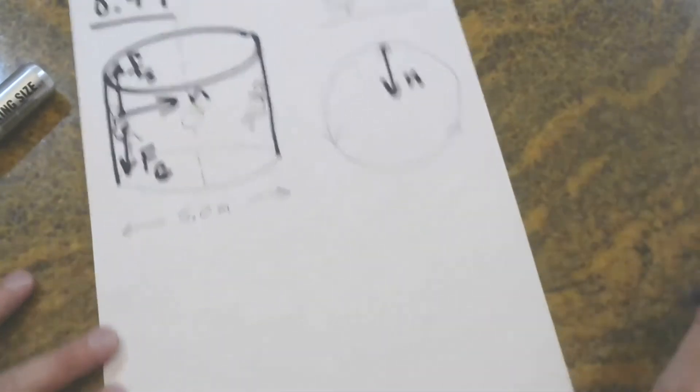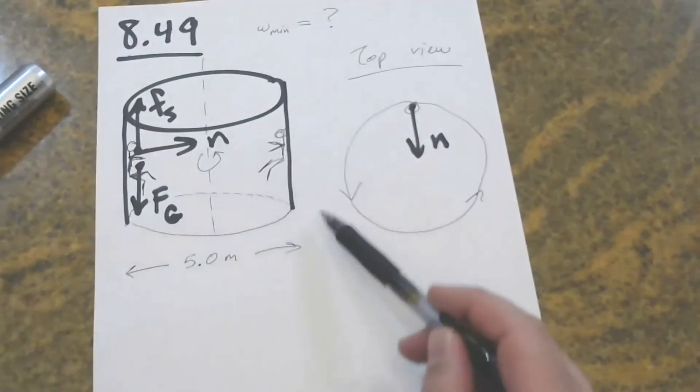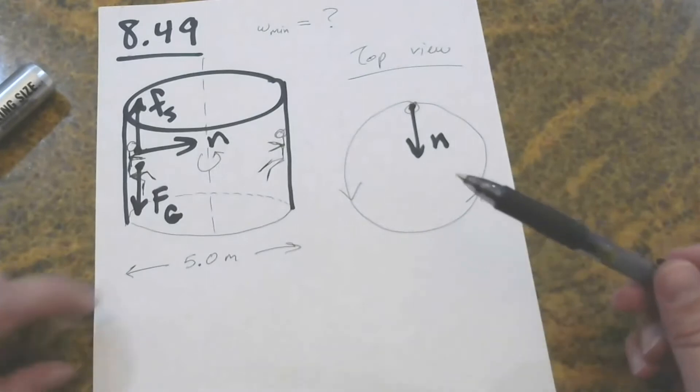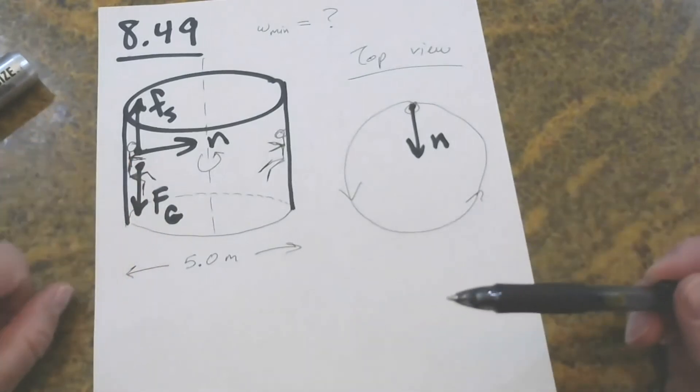And what the problem is really asking us for is, what's the minimum required rotational speed? How quickly does this room need to be spinning before the floor can be lowered? And these people are being supported only by friction. You saw in the beginning of the video, most of the people still have their feet on the floor. That's because the room was not yet spinning fast enough.